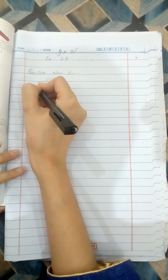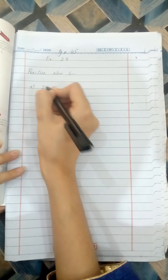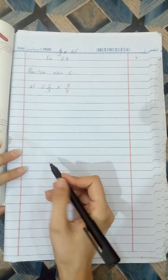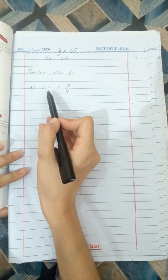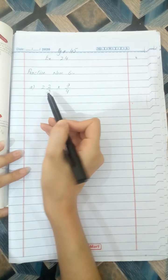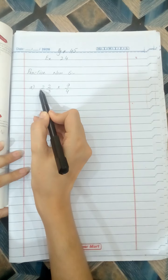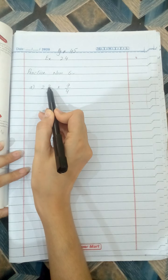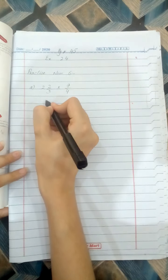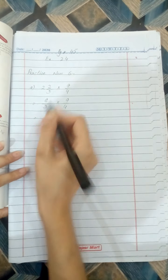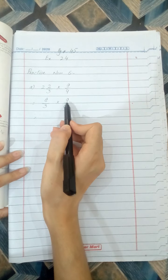So first of all, write the statement, question A: 2 whole 2 by 3 multiply 9 by 4. Students, first of all make it an improper fraction. It is a mixed fraction, make it a simple fraction. So how we solve this mixed fraction? 3 multiply 2, 3 times 2 is 6, plus 2, that is 3 times 2, 6 plus 2 is 8 by 3, multiply by 9 by 4.